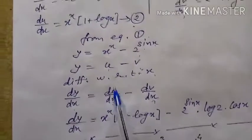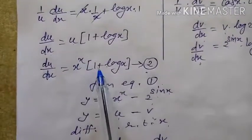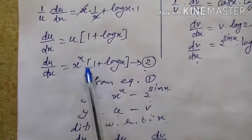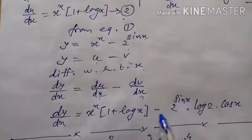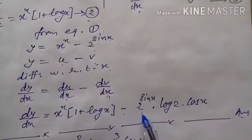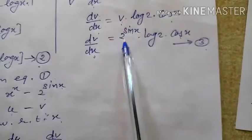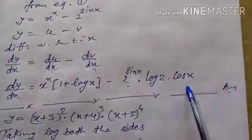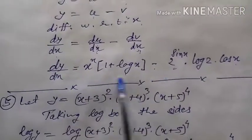Putting in the values: from equation 2, du/dx = x^x · (1 + log x); minus sign; from equation 3, dv/dx = 2^(sin x) · log 2 · cos x. So the final answer is dy/dx = x^x · (1 + log x) - 2^(sin x) · log 2 · cos x. Now next question number 5.